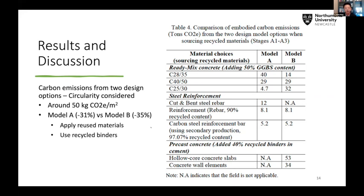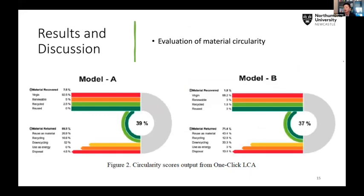Once we consider materials with a high percentage of reused or recycled content, One Click LCA provides a function to assess the circularity of your design. Model A scores 39% circularity and Model B scores 37%. Even though by implementing circular concepts we reduced more than 30% of CO2 emissions, the circularity scores are still not that high. In future studies, we need to think about how to implement circularity across all building materials to reach much higher circularity — perhaps 50%, 60%, even 70%.